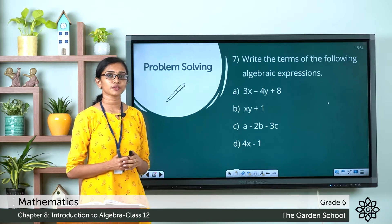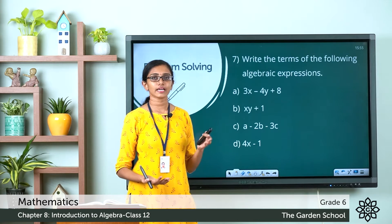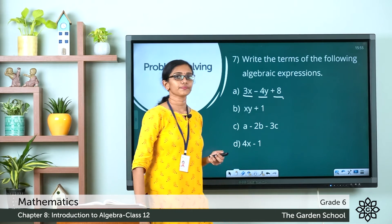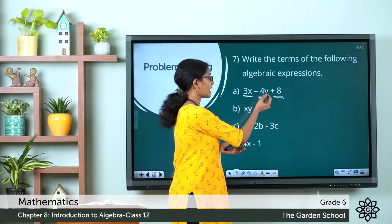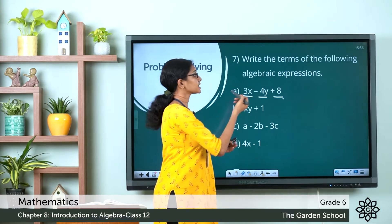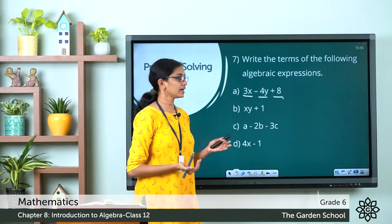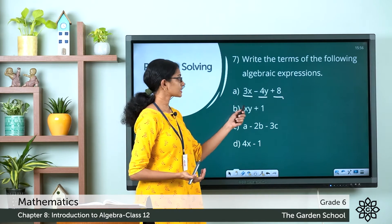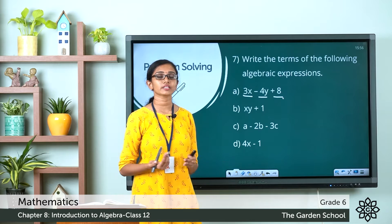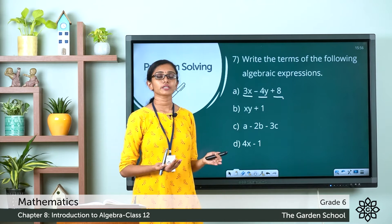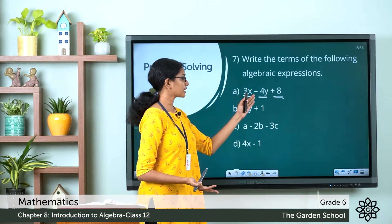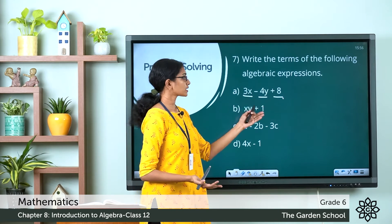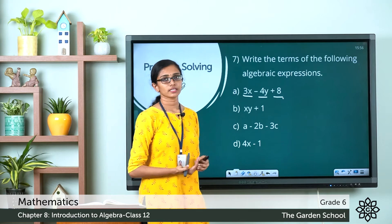Which are the terms in this expression? The terms in the first expression are 3x, 4y, and 8. Here x and y are the variables, 3 and minus 4 are the coefficients, and 8 is the constant. The terms 3x and 4y are separated by the subtraction operator (minus symbol), and 4y and 8 are separated by the addition operator (plus sign).